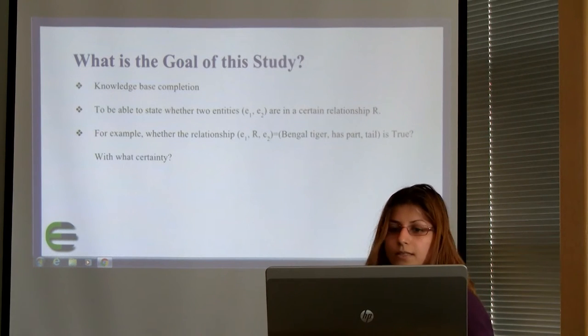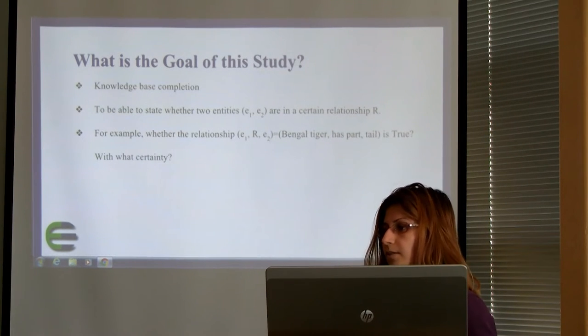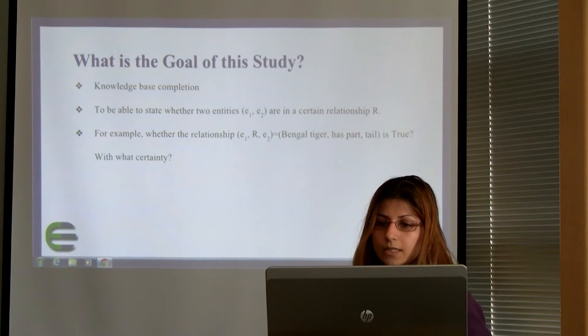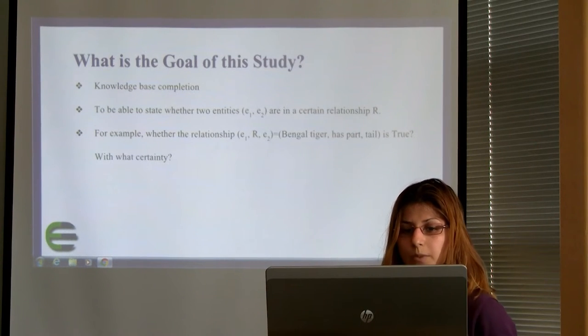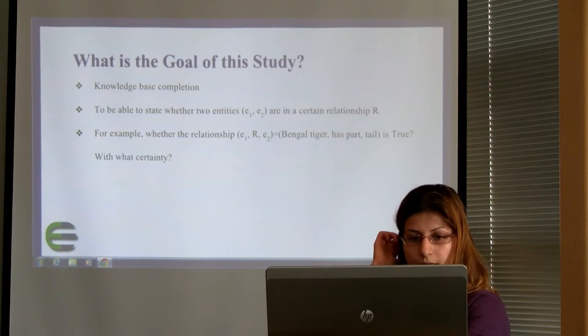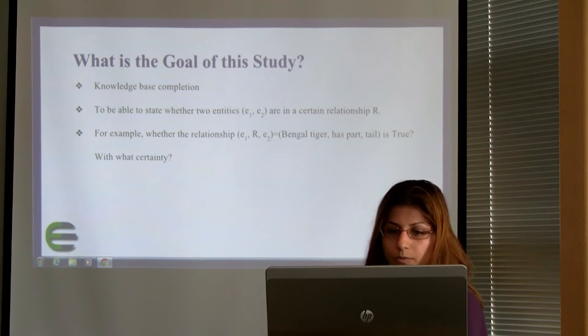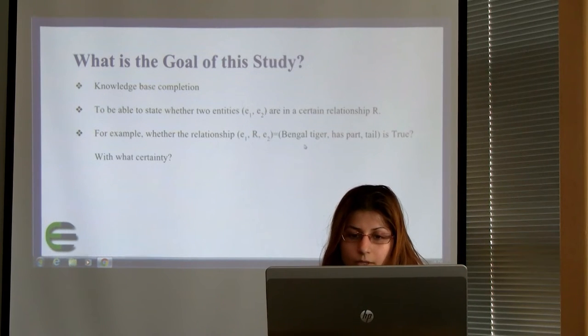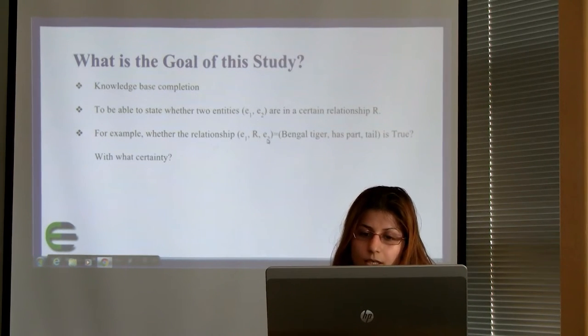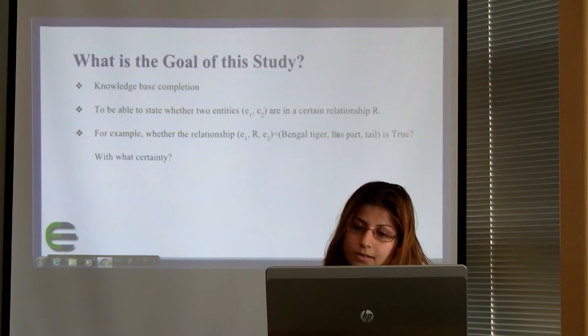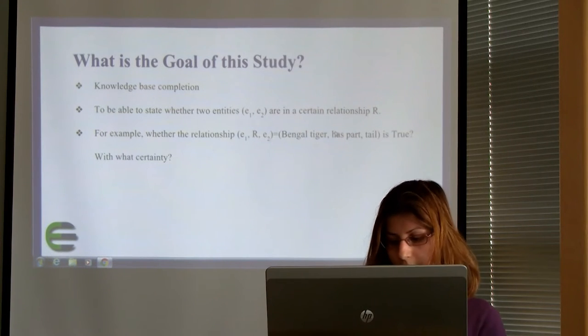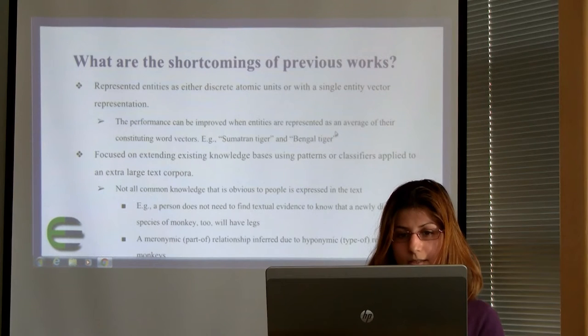So the goal of this study is Knowledge-Based completion. It means that we have two entities. We want to see whether there is a relationship R among them or not. For example, we want to see whether E1 has relationship R with E2 or not. For example, Bengal tiger has tail or not. And with what certainty?